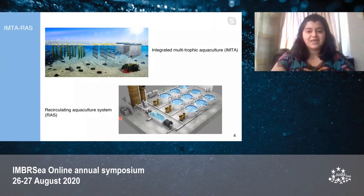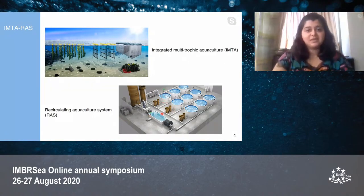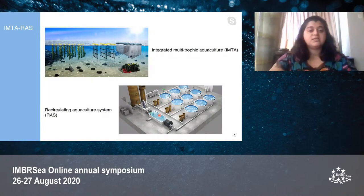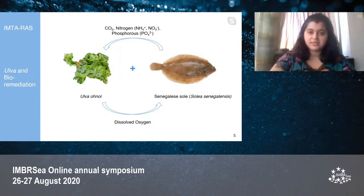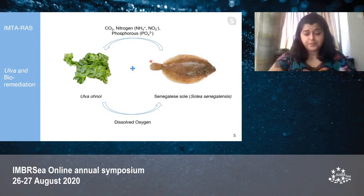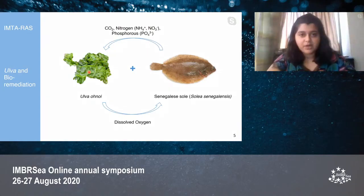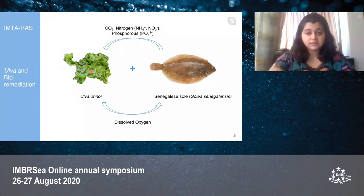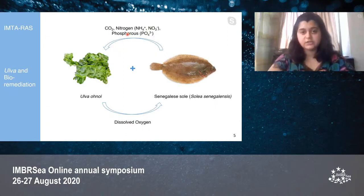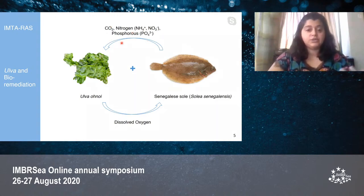The idea was to integrate IMTA with RAS, where we would co-culture another species along with the fish in the tanks that could extract these metabolites and lead to a more balanced system. In this context, the seaweed Ulva ohnoi was identified as the best candidate to be co-cultured with Senegalese sole in IMTA-RAS. The photosynthetic activity of Ulva ohnoi matches the metabolic activity of sole fish. The fish water coming from the fish tanks, containing CO2, nitrogen sources, and phosphorus — which are highly toxic to fish at high concentrations — would reach Ulva, and Ulva is able to uptake these inorganic effluents and produce biomass.